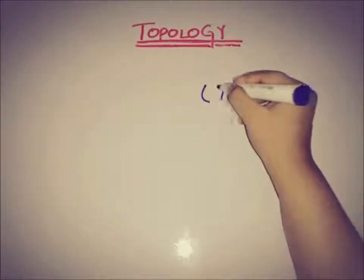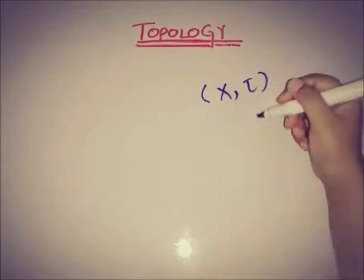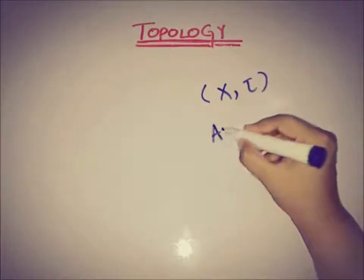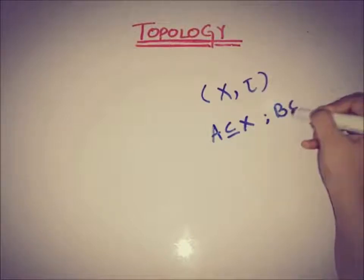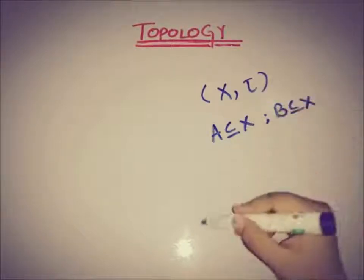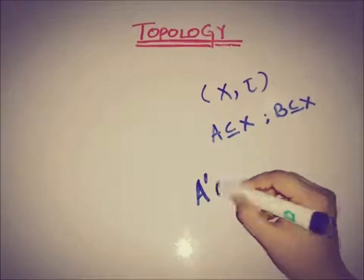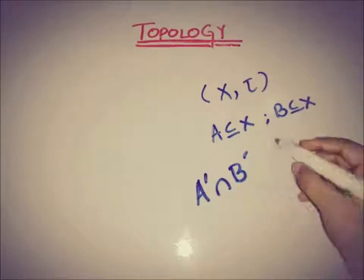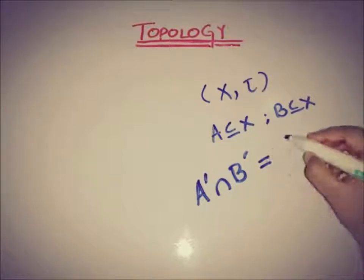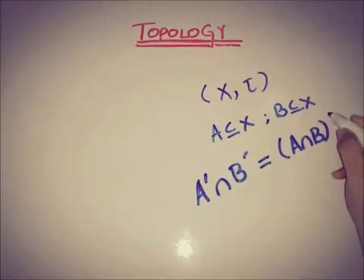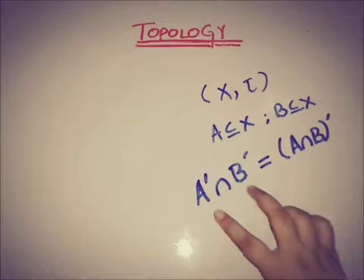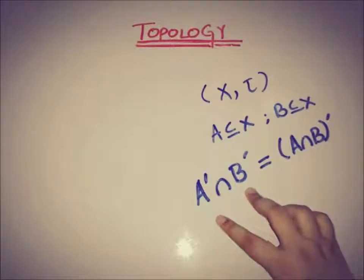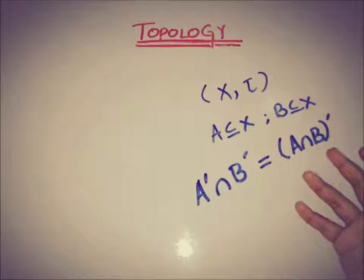The theorem is: if (X, τ) is a topological space and A and B are two subsets of X, then the accumulation set of A intersected with the accumulation set of B is equal to the accumulation set of A intersection B. That is, A' ∩ B' = (A ∩ B)'.